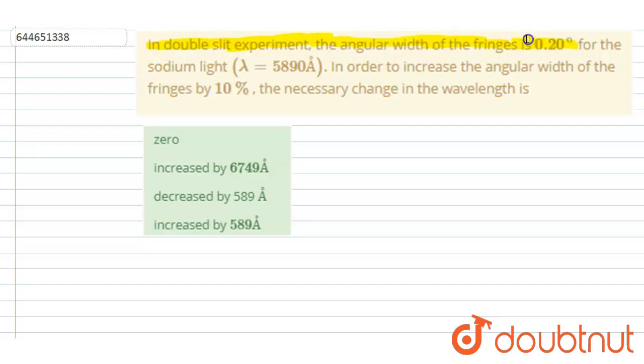Hello everyone. In Young's slit experiment, the angular width of the fringe is 0.2 degrees for the sodium light. In order to increase the angular width of the fringe by 10%, the necessary change in wavelength is...